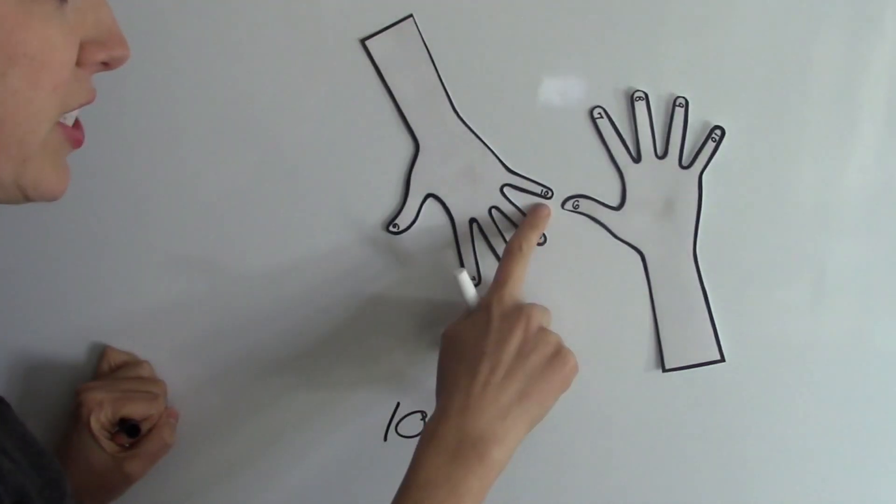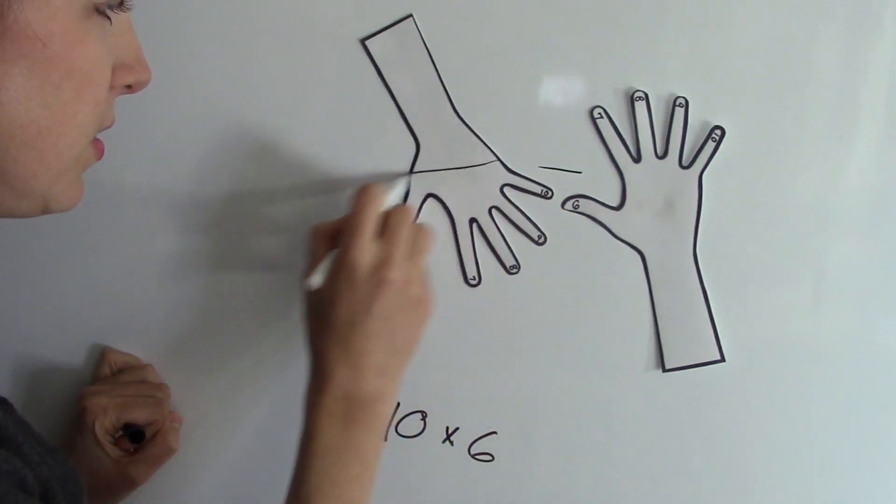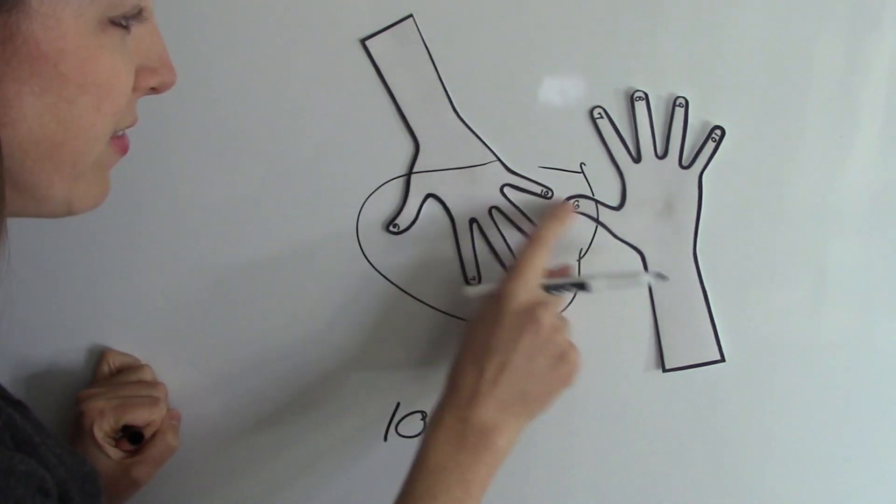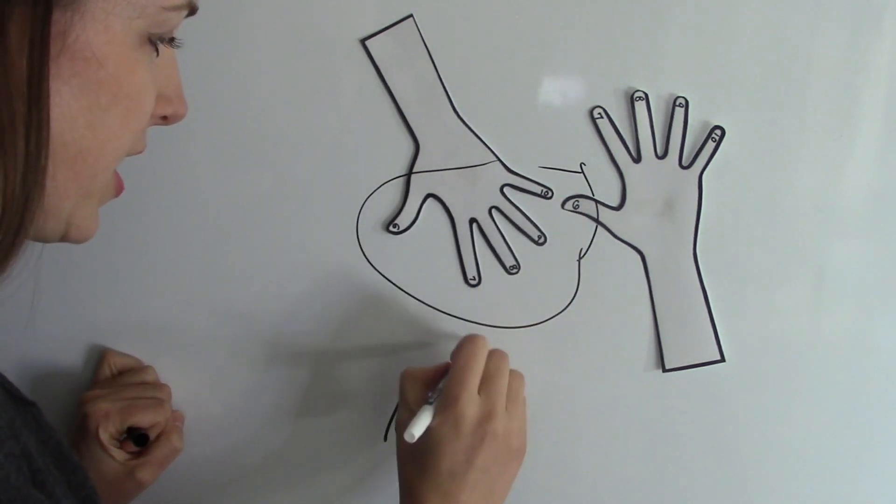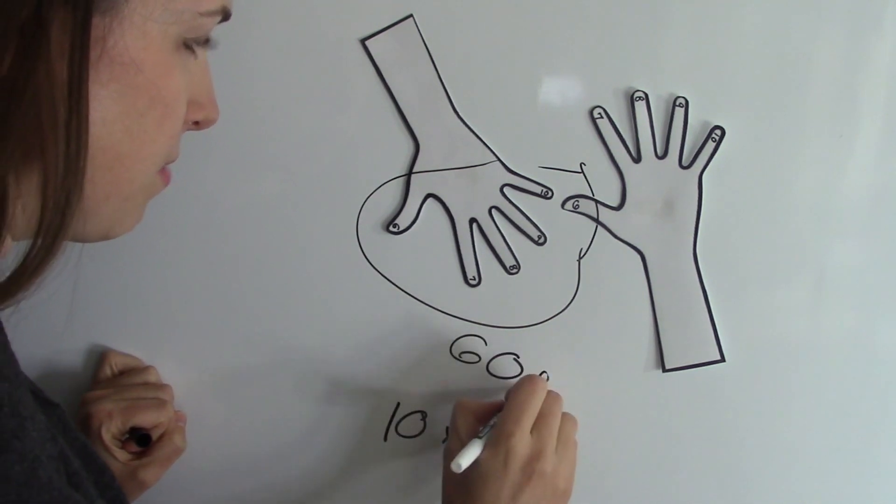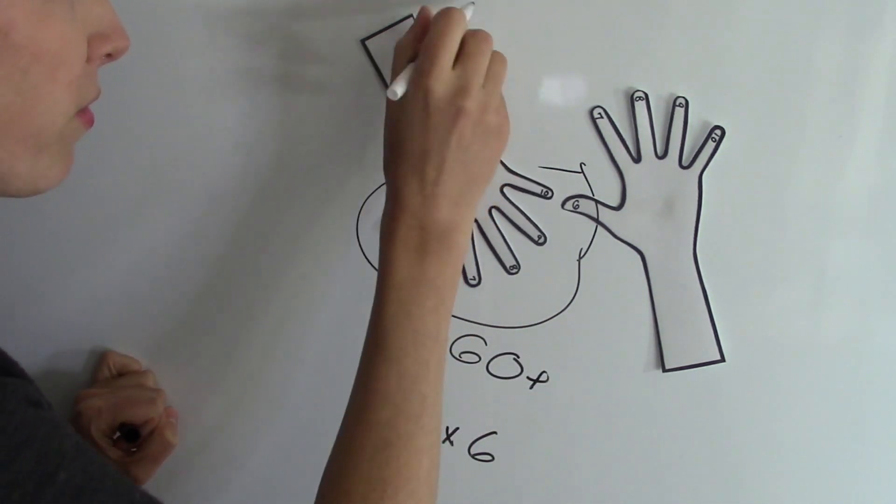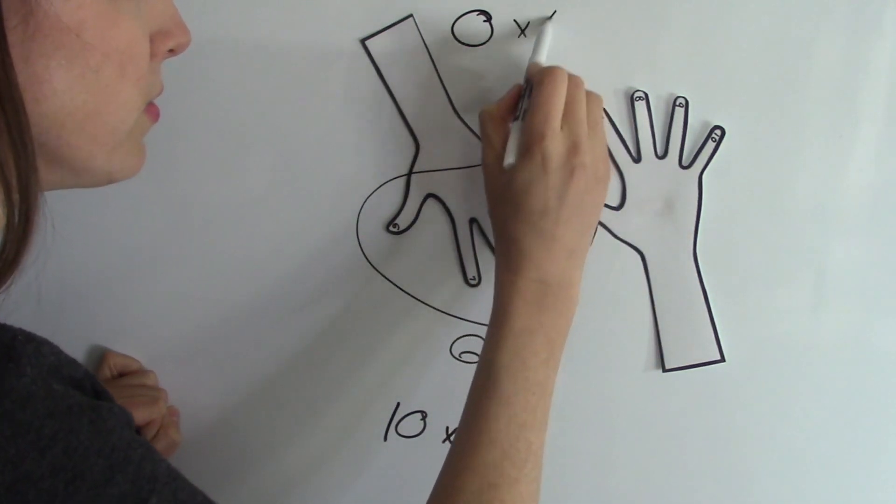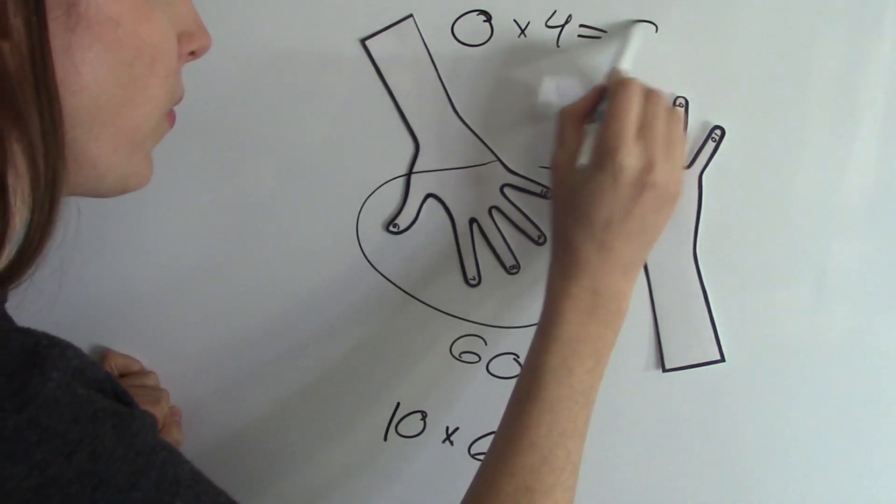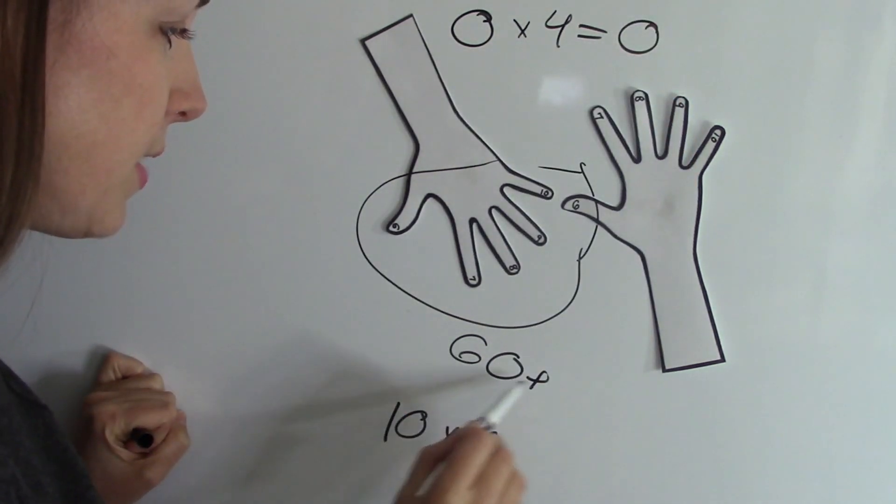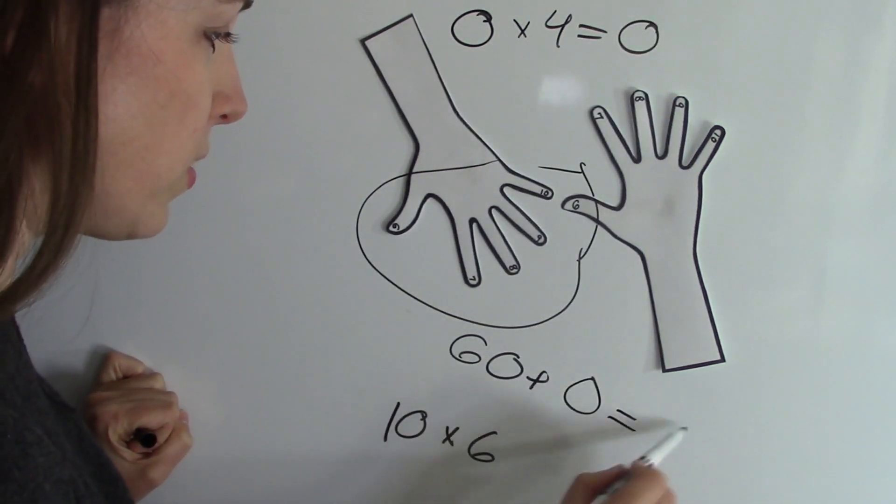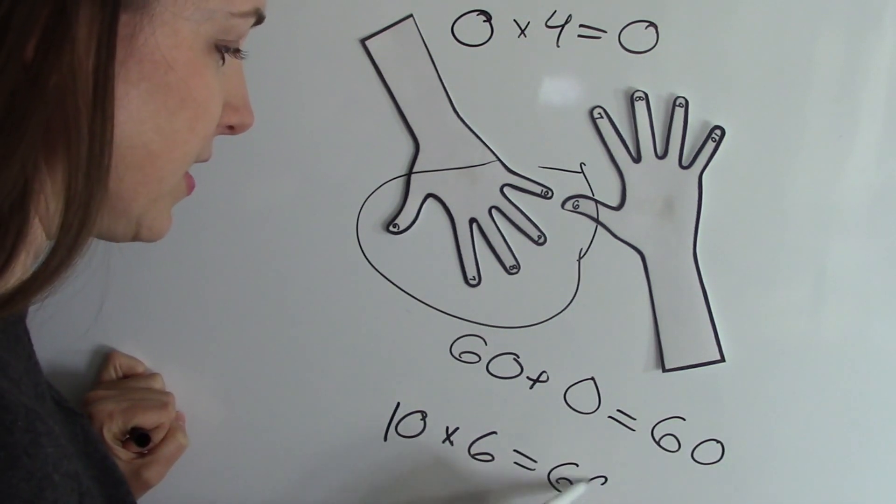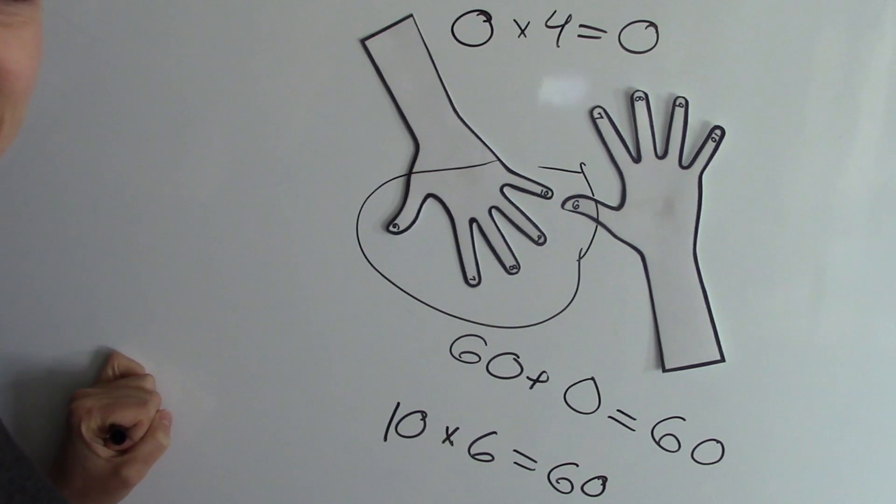Now we have here 10 times 6. So I'll circle these and I have 1, 2, 3, 4, 5, 6, which is 60 plus there's 0 over here and 1, 2, 3, 4 over there. So 0 times 4. Any number times 0 is always 0. So 60 plus 0 equals 60. 10 times 6 is 60. But hopefully you already knew that one.